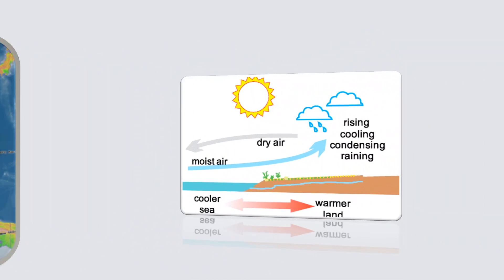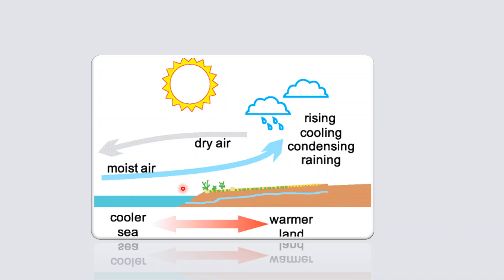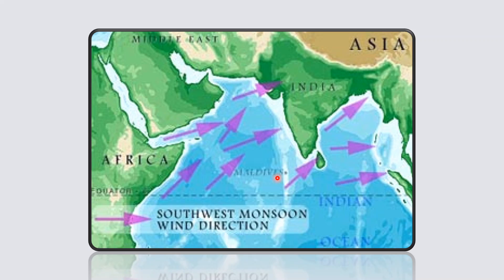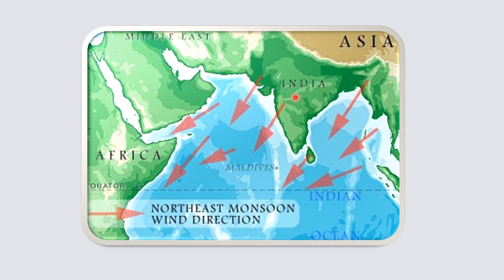Onshore winds reduce summer temperatures and raise winter temperatures in coastal areas. Winds moving towards the shore bring moist air and are also responsible for reducing temperature during summer. In India, the southwest monsoons come from the seas and oceans, pick up a lot of moisture from the Indian Ocean, and drop it over the Indian subcontinent. However, when the same winds move from land to sea, they become generally dry winds.